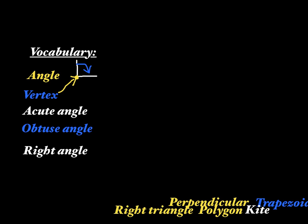An acute angle is going to be an angle that is smaller than 90 degrees. So this would be an acute angle, less than 90 degrees.